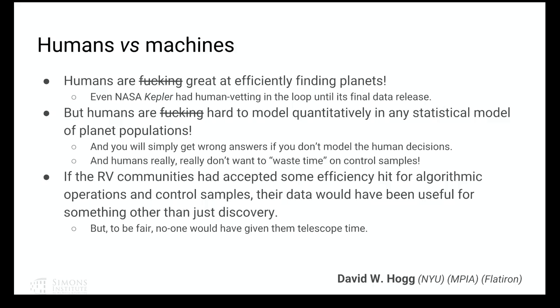One of my main points is that humans are unbelievably good at finding planets, but they're very hard to model quantitatively. If you naively try to use the radial velocity data presuming that the humans were somehow trivially rational, you'll get wrong answers. Another problem is that humans don't like to waste time on control samples, which is a very big problem. To be absolutely fair, I'm not sure that time allocation committees would have given astronomers telescope time if they had done what I'm about to ask them to do.